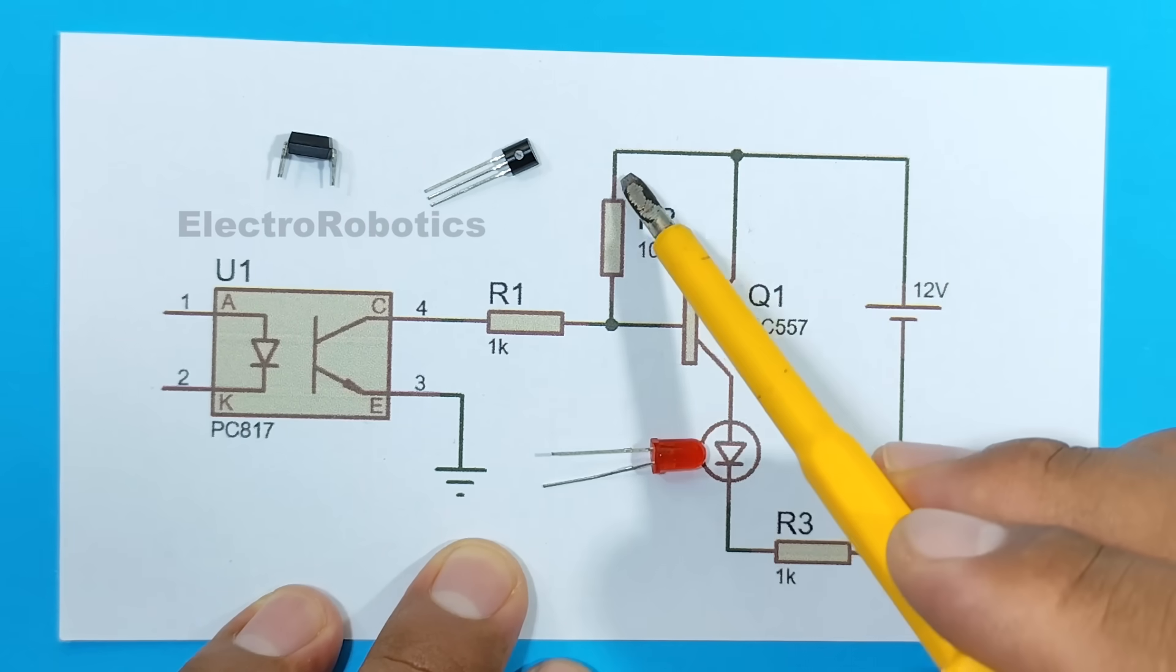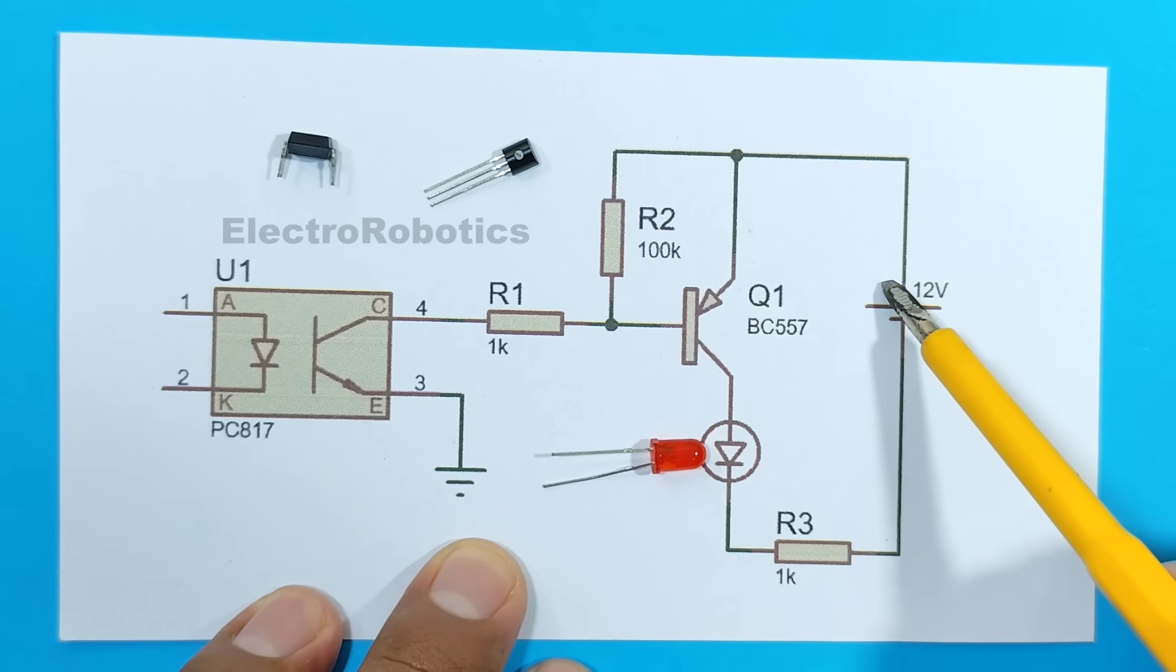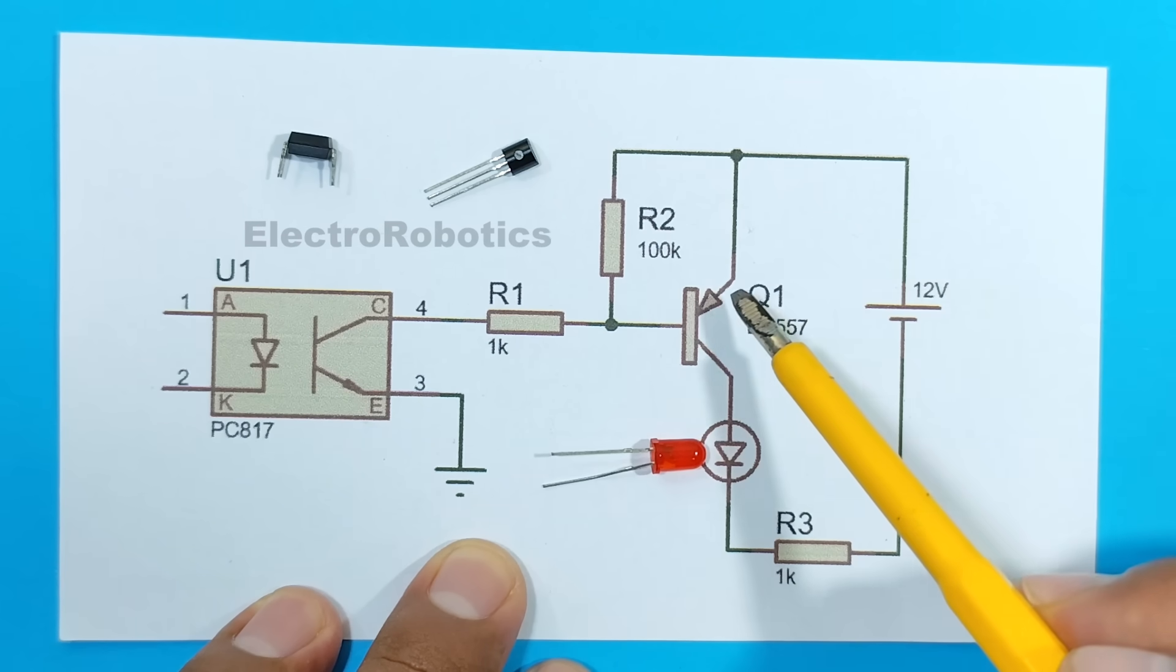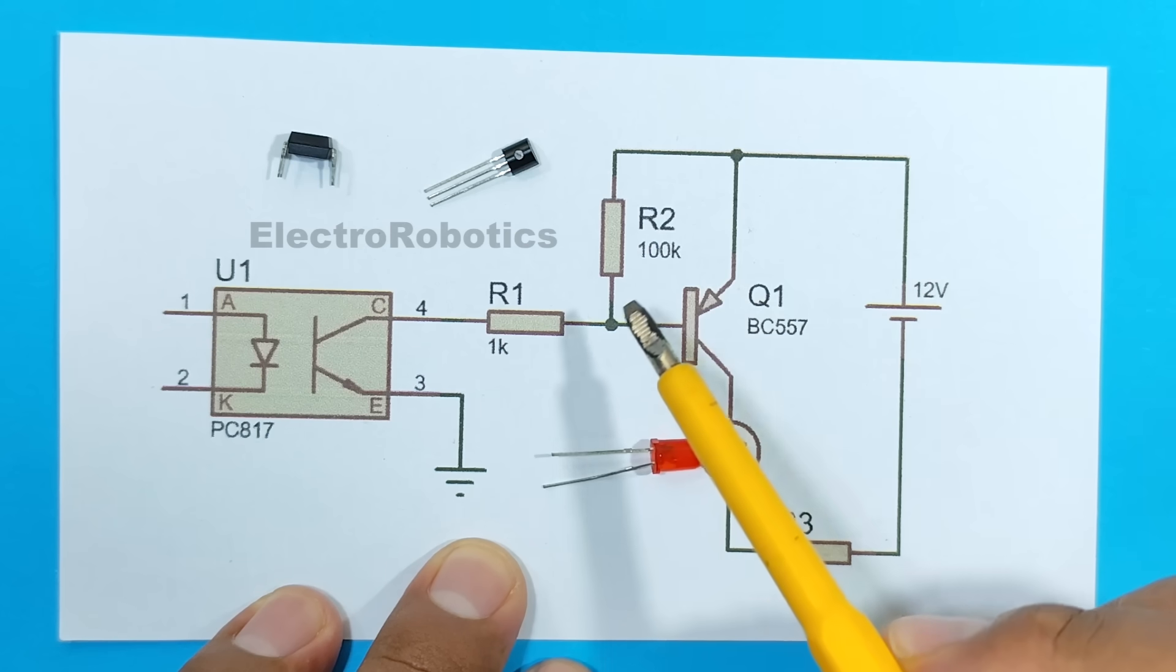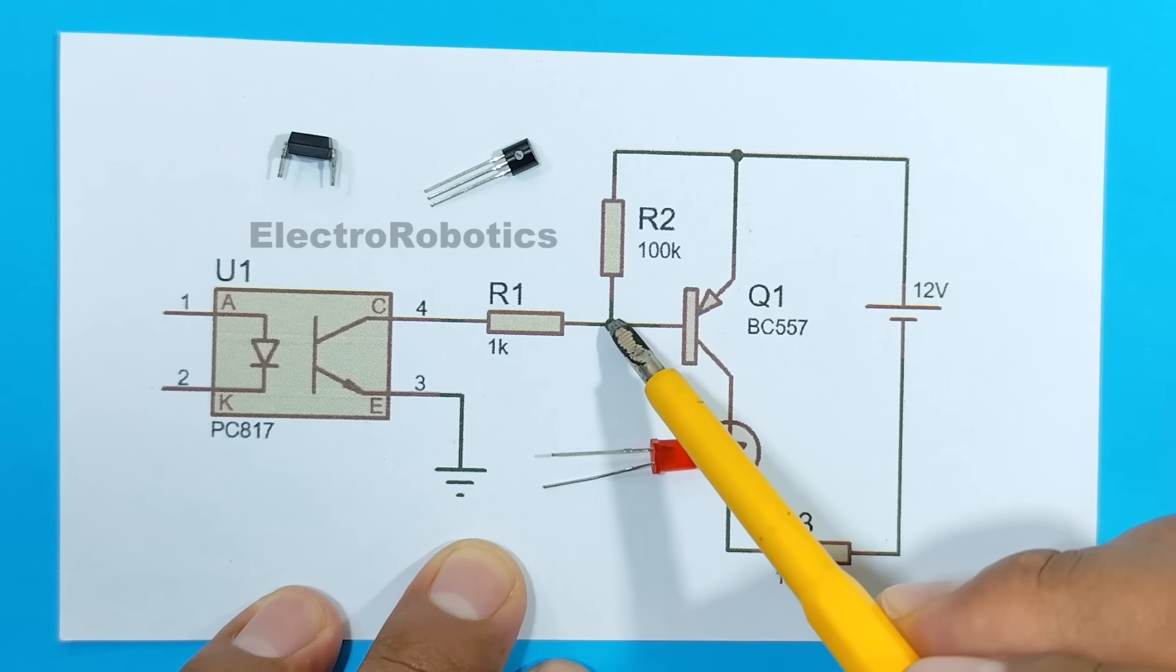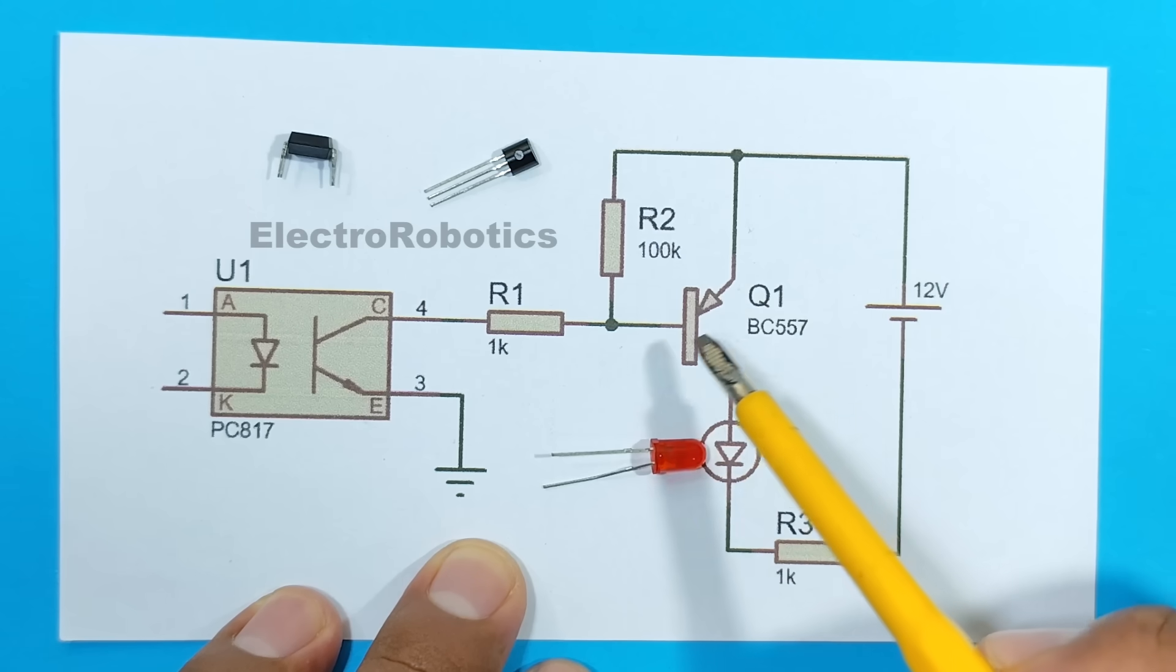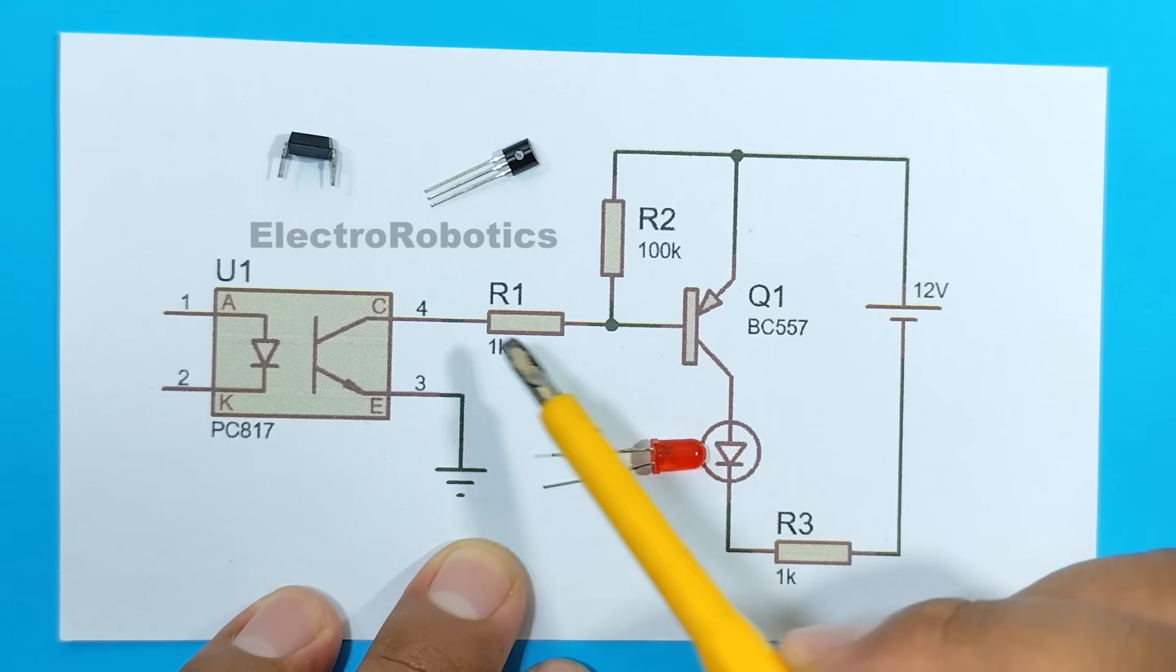Here we can see that the resistor is connected to the base, and from there it is connected to the positive terminal. And remember that we are using a PNP transistor, which needs a negative signal at the base to function. Therefore, by delivering a positive signal to the base, the transistor will not work.